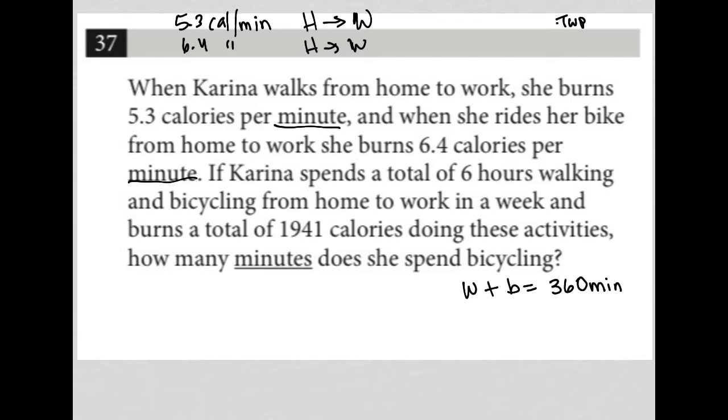And burns a total of 1,941 calories doing these activities. Okay. So how many calories are burned from walking? That's 5.3. So I get 5.3 times however many minutes she walked, plus 6.4 times however many minutes she biked. And that will give us the total calories of 1,941.